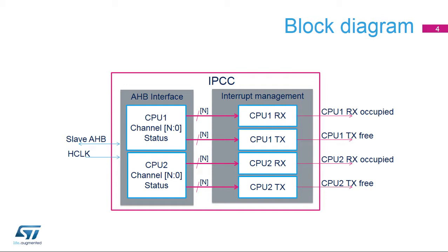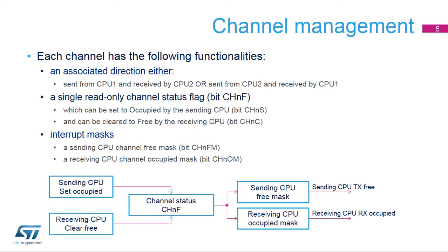Dedicated interrupts are provided for each CPU. A channel is associated with a direction from a sending CPU to a receiving CPU. The sending CPU can signal a channel to be occupied by setting the channel status to occupied using its Set Channel N Register Bit, or CHNS. If the receiving CPU has unmasked its channel-occupied interrupt in its Channel N Occupied Mask Register Bit, or CHNOM, an RX-occupied interrupt, or message available, is generated for the receiving CPU.